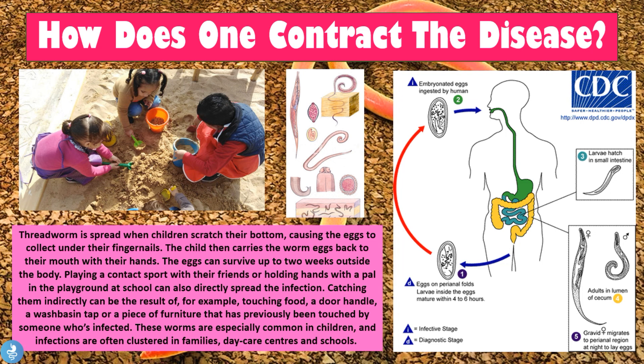Catching threadworms indirectly can result from touching food, a door handle, a washbasin tap, or a piece of furniture that has previously been touched by someone who is infected. These worms are especially common in children, and infections are often clustered in families, daycare centers, and schools.